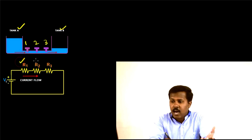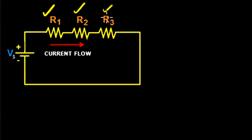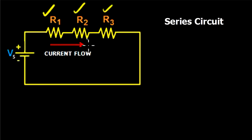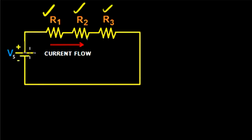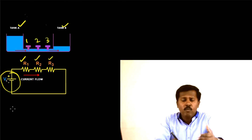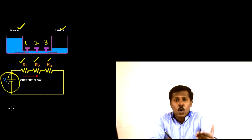Similarly, consider connecting three resistors R1, R2, and R3 in a circuit as shown here. This kind of circuit is a series circuit because they are connected one after another and there is only one current flowing through the circuit. The supply voltage provided is denoted using the letter Vs. Now let us analyze what will be the effective resistance, or total resistance, of this circuit.